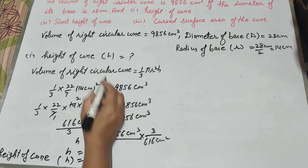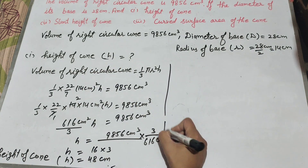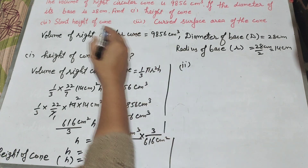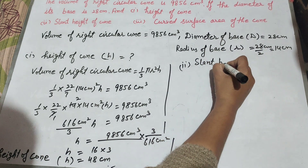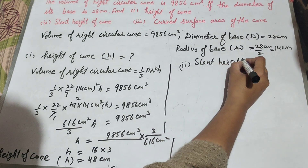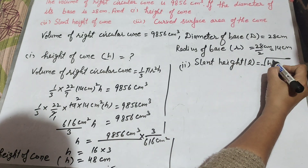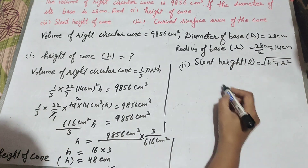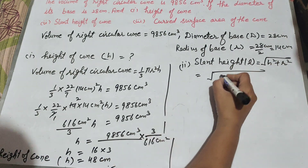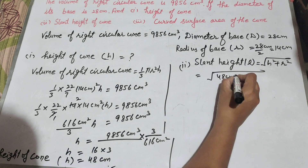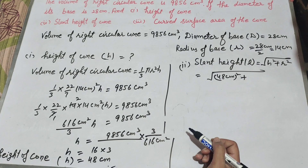Height of cone is equal to 48 centimeter. Now we move to the second part, where we find the slant height of the cone. Slant height l is equal to the square root of h squared plus r squared. That is the square root of h squared, where h is 48 centimeter, squared, plus r squared, where r is radius 14 centimeter squared.